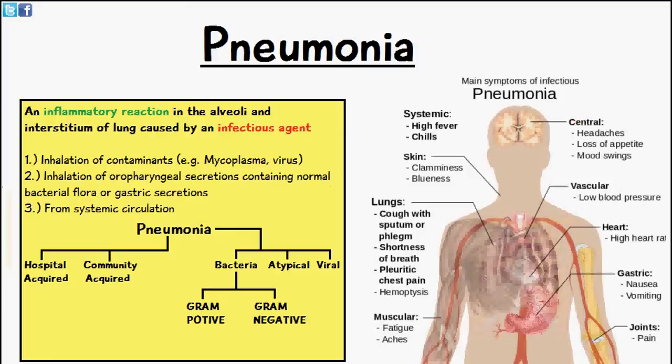Welcome to 5-Minute School. In today's video we'll be talking about pneumonia. Pneumonia is an inflammatory reaction in the alveoli and the interstitium of the lungs, and it's going to be caused by some form of infectious agent.